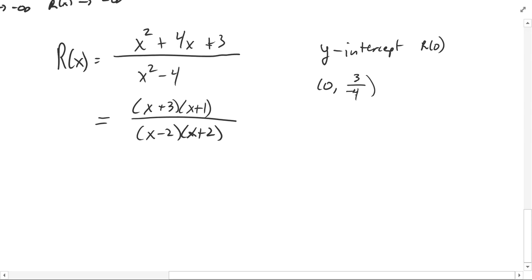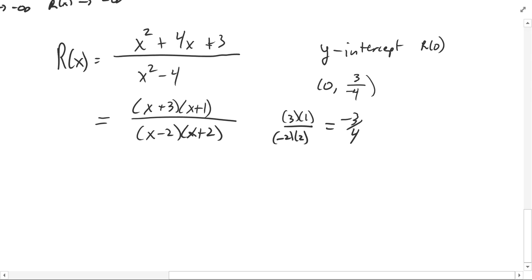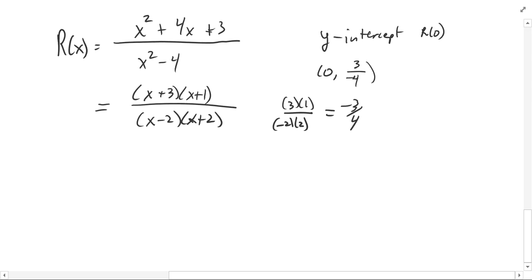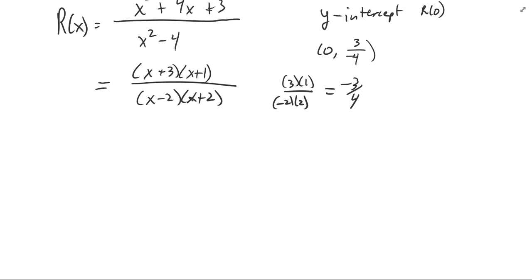It's a little harder to see in the factored form, but it's there as well. If you put in 0 for x, you'll have 3 times 1 on the top, and on the bottom you'll have negative 2 times 2 — still the same thing, negative 3-fourths for your y-intercept. The other creatures that come up with the short-run behavior are the vertical asymptotes and the x-intercepts.